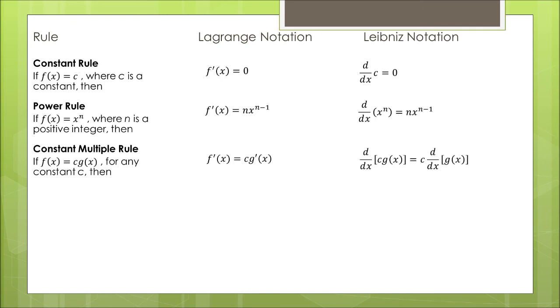If we have a function f of x which is c times g of x, the derivative is going to be given by c times the derivative of g of x. So in other words, this constant doesn't really influence our derivative.